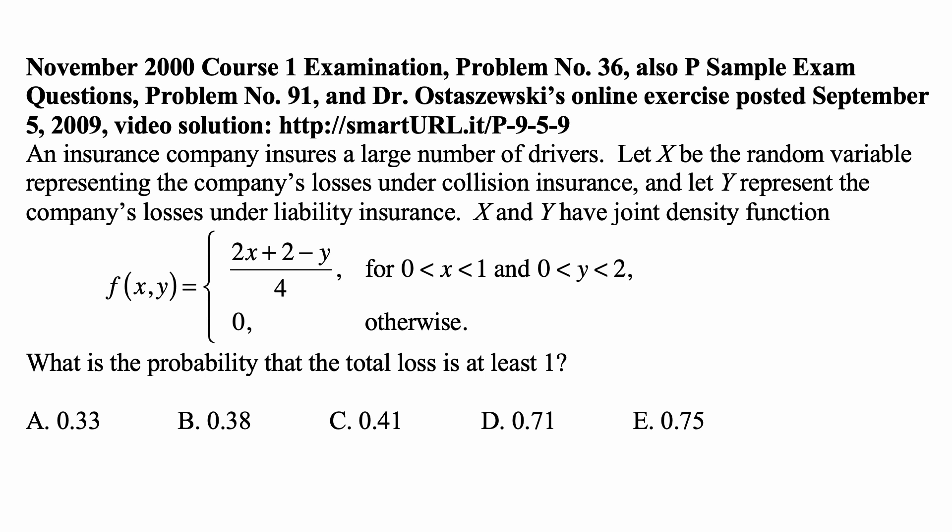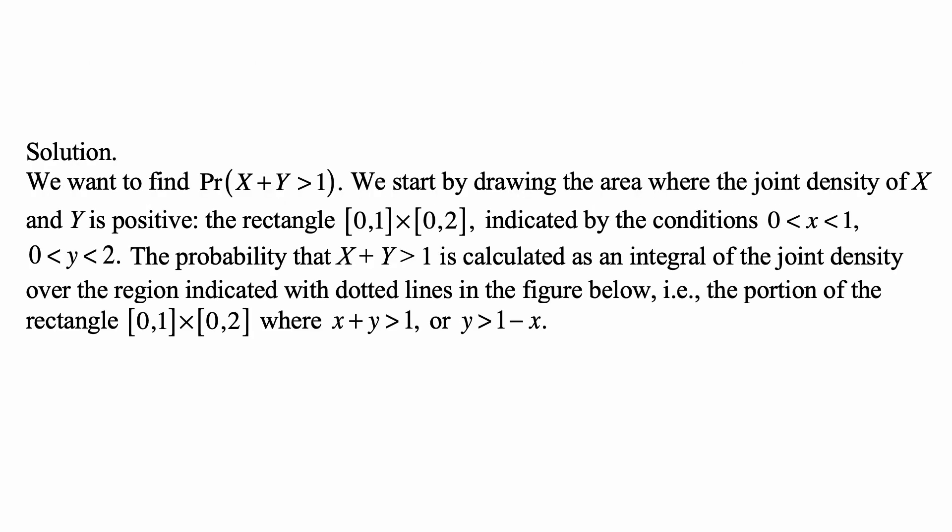What is the probability that the total loss is at least 1? Here is the solution. Total loss being more than 1 is the event of x plus y being more than 1, and we're looking for a probability of that. So we start by drawing the area where the joint density of x and y is positive, and that's the rectangle [0,1] times [0,2]. So a rectangle with values of x between 0 and 1 and values of y between 0 and 2.